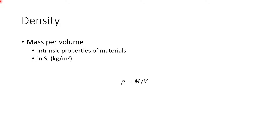First of all, when you talk about density, density is defined by mass per volume. You can see in this equation, the symbol for density is generally rho, this little Greek letter here, where M is mass and V is volume. So density is defined by mass per volume. In SI units, it's going to be kilograms per meter cubed.